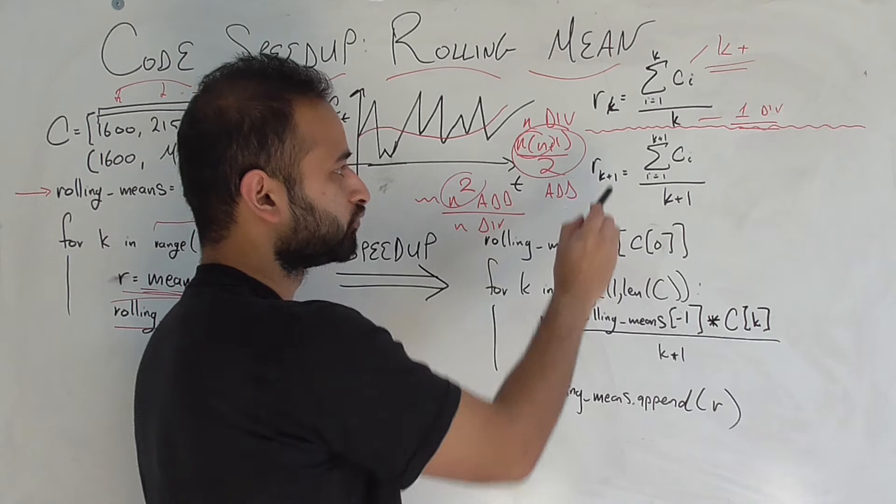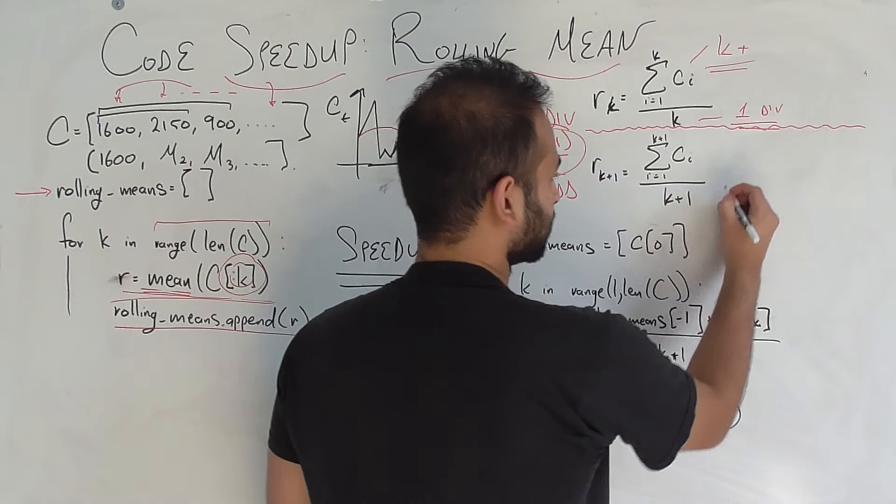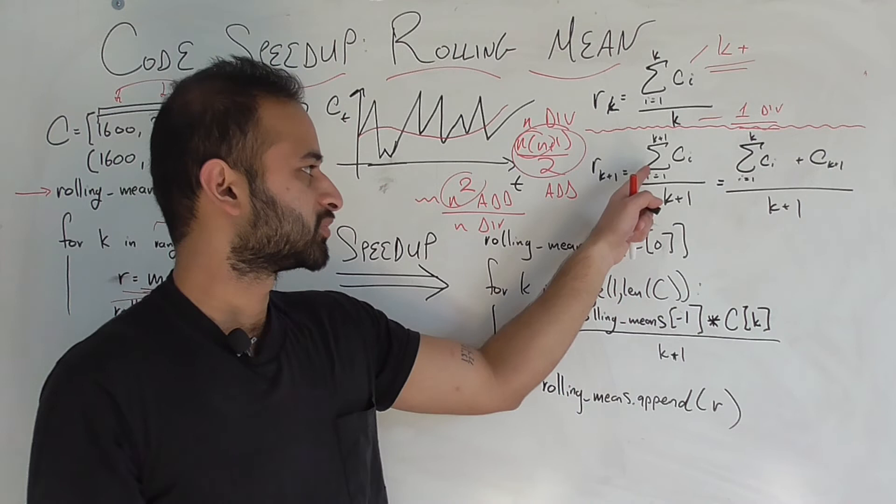So what if I want to calculate the rolling mean for the k plus first day? Let's say I already have it for the kth day, I've already thrown it into my list of rolling means. Let's say I'm calculating the next day. Of course, the formula just changes by putting k plus ones everywhere, but let's rewrite this a little bit further. This is really sum from i equals one to k of ci plus ck plus one over k plus one.